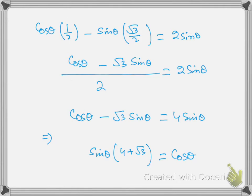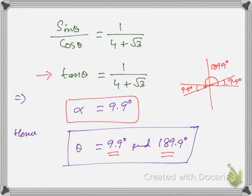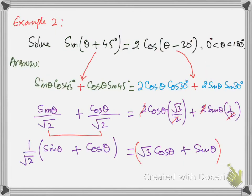After substituting, take the LCM, do cross multiplication, then bring sine to one side so you can take sine common. This gives sine θ upon cos θ equals 1 upon (4 + √3). Since sine upon cos is tan θ, therefore tan θ = 1/(4 + √3). Since this is positive, tan must be in the first and third quadrant. This is the basic angle alpha, and the answers will be 9.9° and 189.9°.